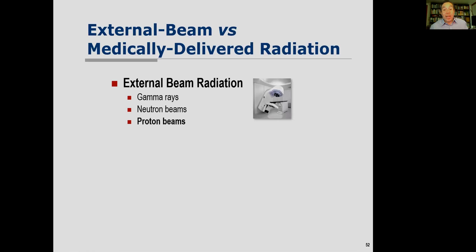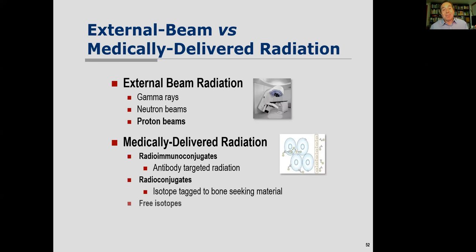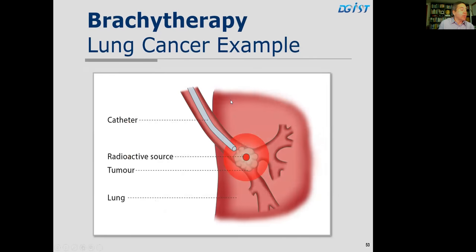Two types of radiation delivery exist. External beam radiation includes gamma rays, neutron beams, proton beams, and x-rays. Internally delivered radiation — brachytherapy — includes radio-immunoconjugates (antibody-targeted radiation), isotopes tagged to bone-seeking material, free isotopes like radioactive iodine or gallium. In brachytherapy, a catheter is passed through the bronchi into the lung near a tumor, and a radioactive source is placed directly adjacent to deliver continuous radiation, unlike the fractionated external beam approach.